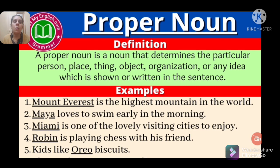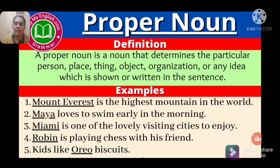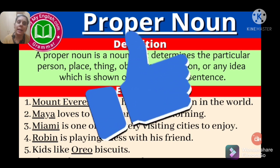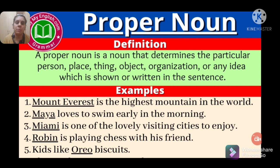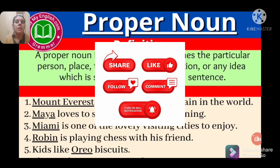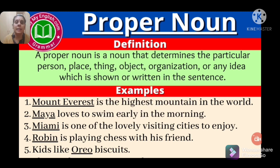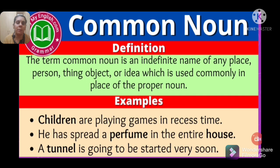A proper noun is a noun that refers to a particular person, place, thing, object, organization, or idea — it tells the specific name. Examples: 'Mount Everest is the highest mountain in the world' — Mount Everest is a proper noun. 'Maya loves to swim early in the morning' — Maya is a proper noun. 'Miami is one of the lovely cities to visit' — Miami is a proper noun. 'Robin is playing chess with his friend' — Robin is a proper noun. 'Kids like Oreo biscuits' — Oreo is a proper noun.